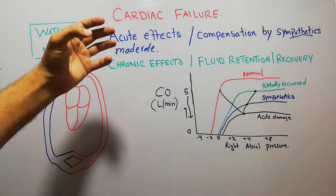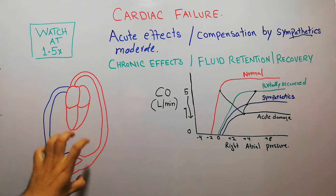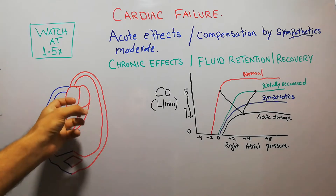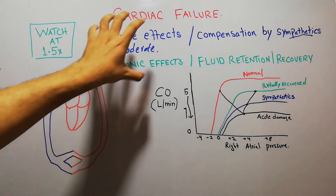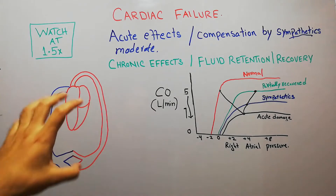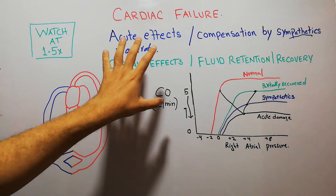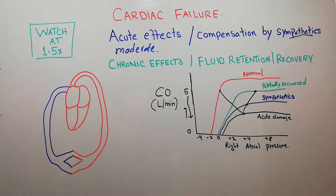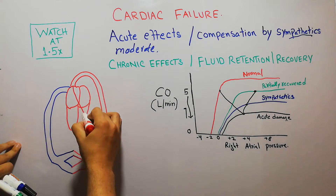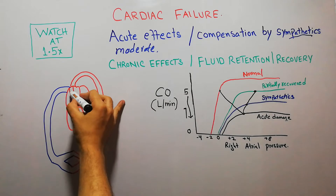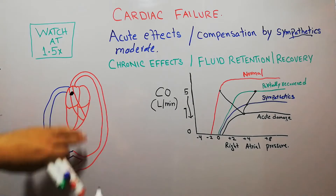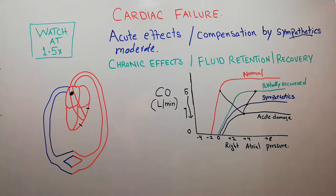Cardiac failure is the inability of the heart to fulfill the needs of the human body. The heart is unable to pump enough blood to fulfill the demands of the body. Cardiac failure can occur due to different conditions, but most probably it is due to ischemic heart disease. When the blood vessels supplying blood to the heart muscles get blocked, blood supply to certain parts of the heart muscles decreases, and this is the most common cause of acute heart failure.